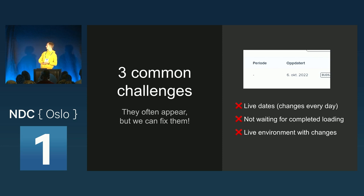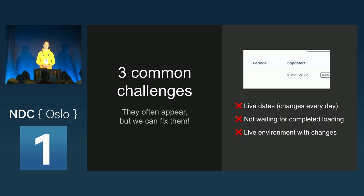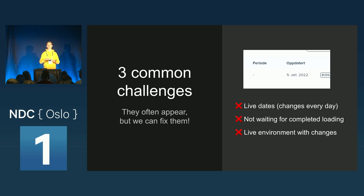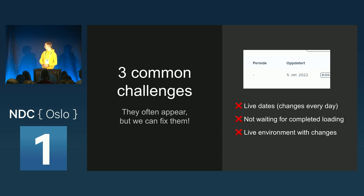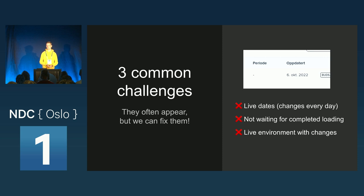Quickly, three challenges I've seen multiple times. First, live dates: if you have live dates in your screenshots, they will change every day and you'll get tons of false positives. Try to mock them, freeze them, or just hide them. Second, wait until the page is fully loaded — you don't want an animation of loading the page sometimes and a fully loaded page other times. Ensure it's fully loaded, and then you don't have to worry about flaky end-to-end tests and flaky snapshots. Lastly, try to avoid using it on a live environment, because things can change outside your control — maybe someone added content to the CMS — so you get snapshot changes that didn't come from code changes in your PR.